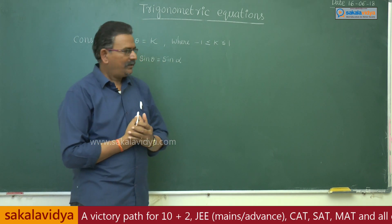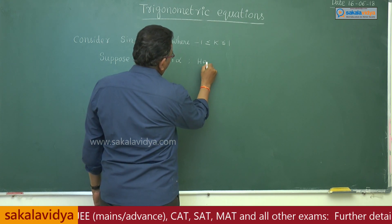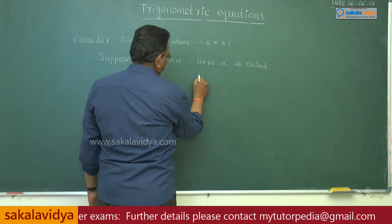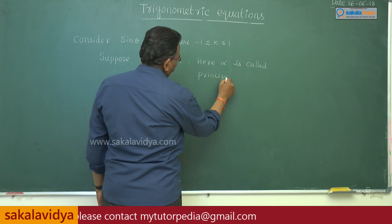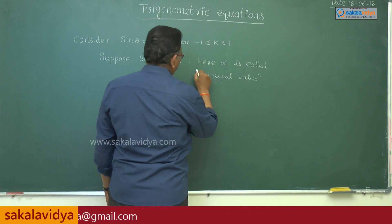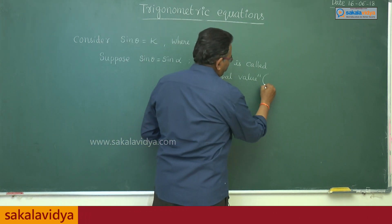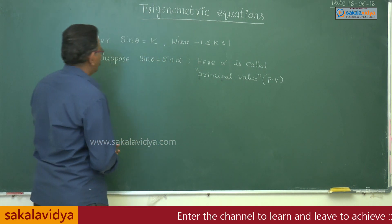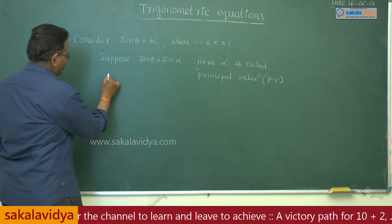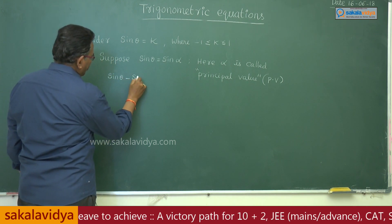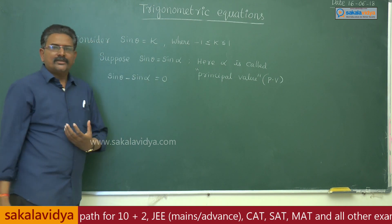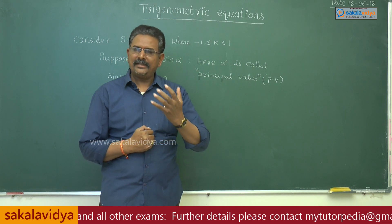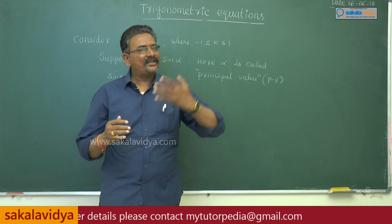Suppose sin θ = sin α, where α is called the principal value — abbreviated as PV in this chapter. Now, bringing sin α to the other side: sin θ − sin α = 0. This is in the form of sin C − sin D. We have discussed this formula in earlier episodes in the transformation chapter. Please watch that transformation chapter in our playlist on the Sakhala Vijja YouTube channel if you need a refresher.